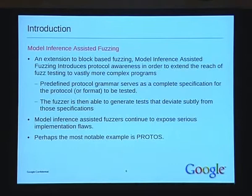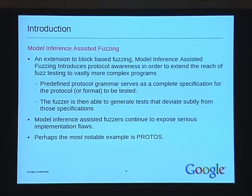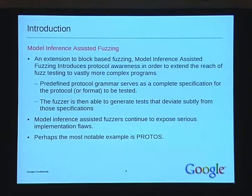Another way of extending fuzz testing to more complex protocols is model inference-assisted fuzzing. With this approach, you have a detailed protocol specification, usually in the form of something like BNF. The fuzzer parses this specification and generates protocol streams that break these specifications in some subtle way to explore the program's attack surface. Once it's parsed the specification, it can deviate subtly, and this is where interesting bugs are found.